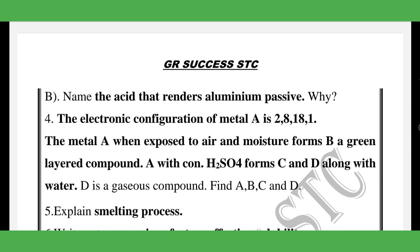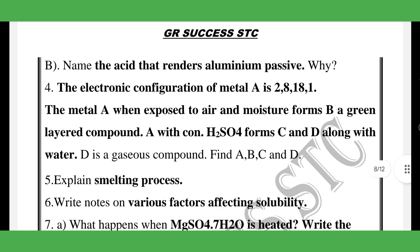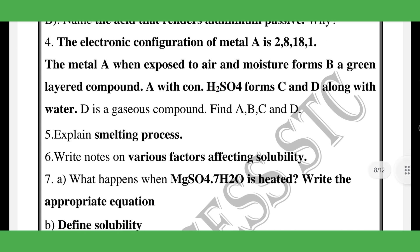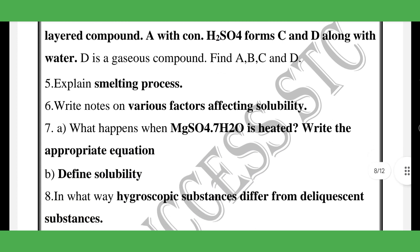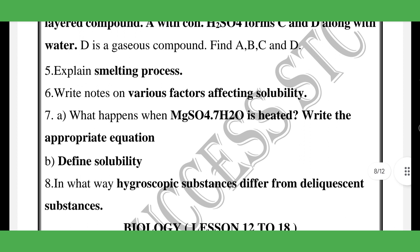Four-mark: electronic configuration. Metal A — copper A, B, C — PTA question. Smelting process. Various factors affecting solubility. What happens to magnesium sulfate (MgSO₄·7H₂O) — epsom salt — depending on solubility.